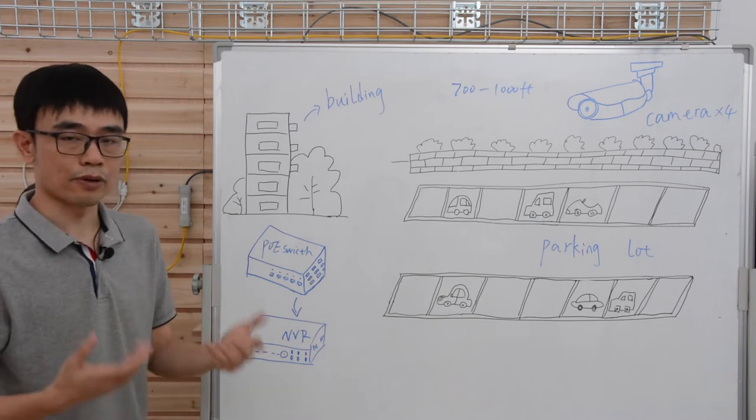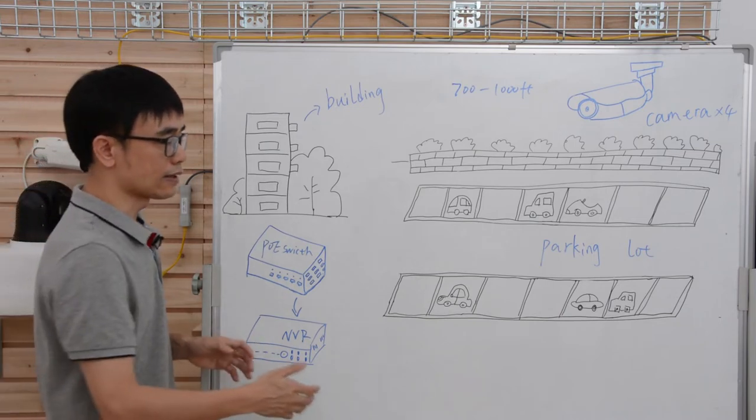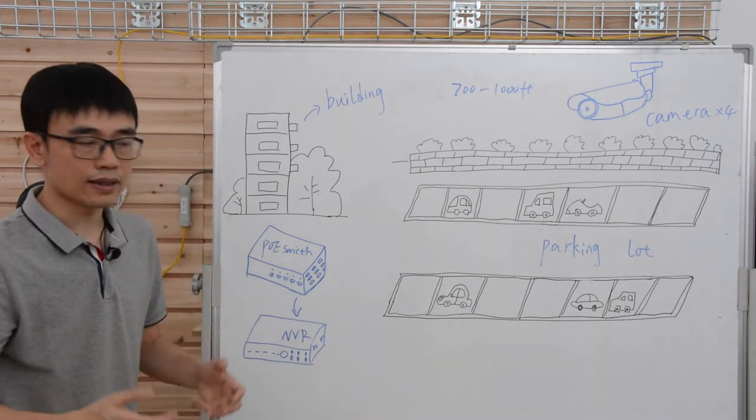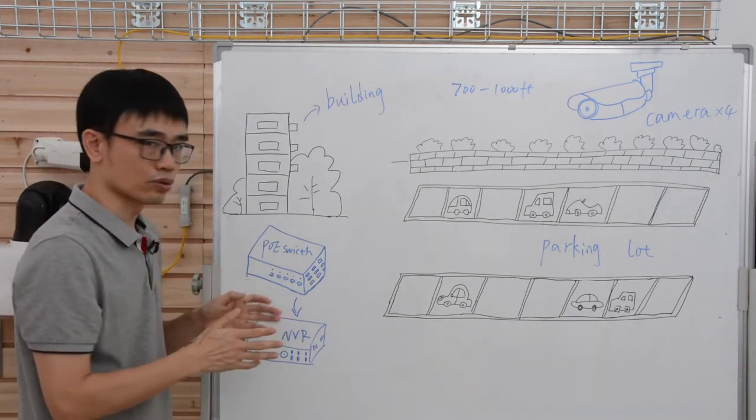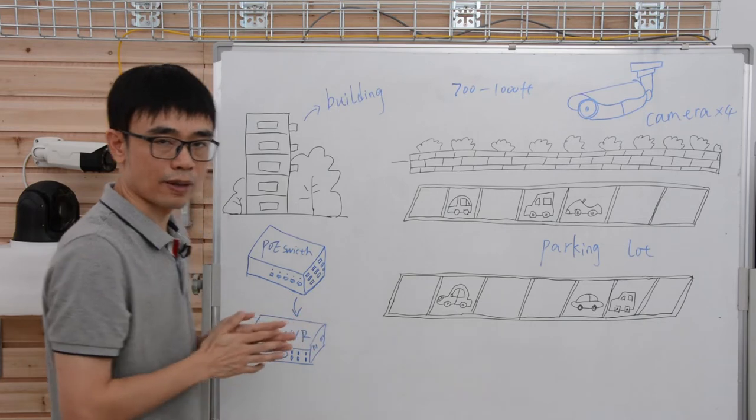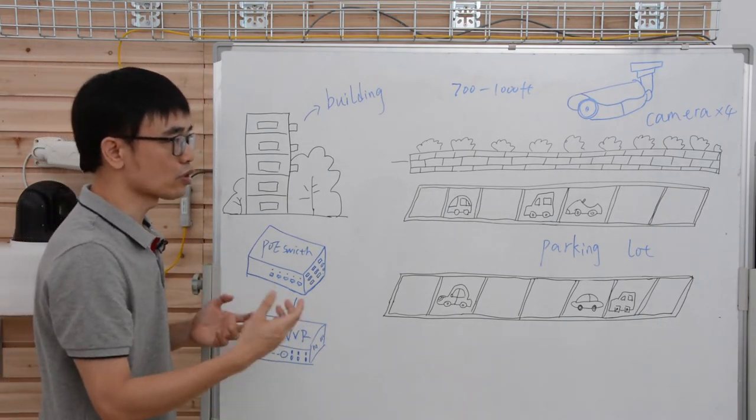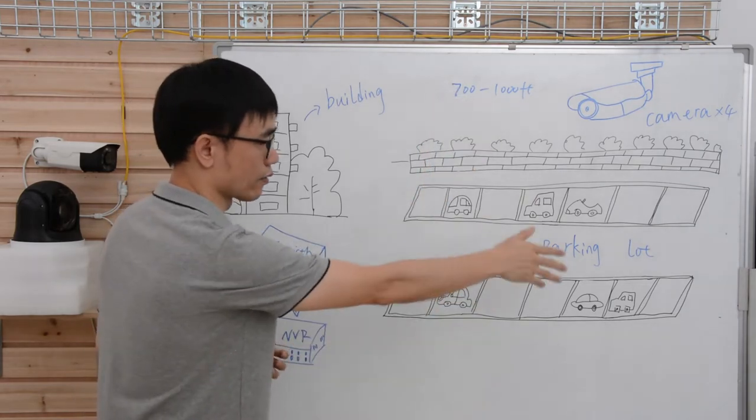The optional solution is the fiber optic cable, but he may need to add a media converter to each of these cameras. More importantly, he cannot send the power through the fiber optic cable. The fiber optic cable is just plastic. So he also needs a power source available around each of these cameras.